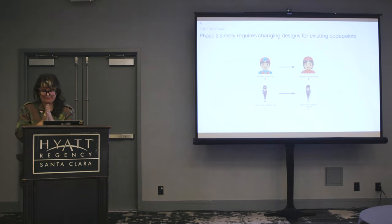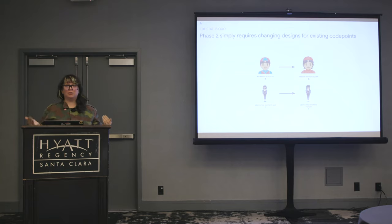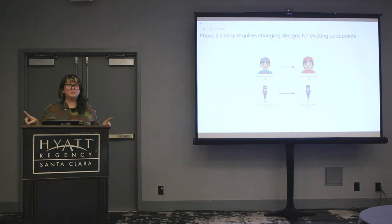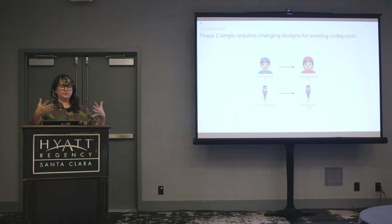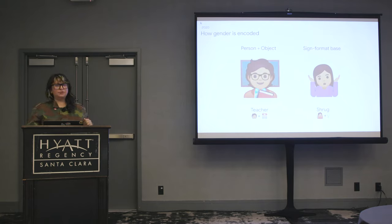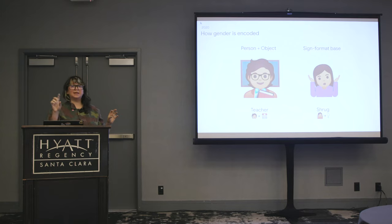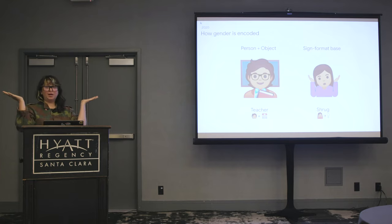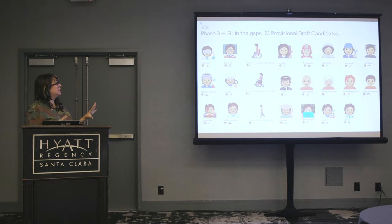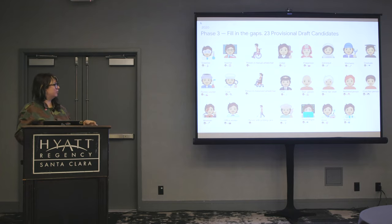That was just phase one. Phase two simply requires changing some designs for existing code points. Two particular fairly obscure emojis — man with skullcap and levitating businessman — both have interesting histories. The recommendation here is to remove them from the explicitly gendered list on TR51 and create gender-inclusive designs. Phase three requires a deeper understanding of how gender is encoded with emoji. There are two real formats: one is combining a person emoji with an object emoji — so school teacher is person plus school. There's also a sign format base, which is person plus a sex symbol — so if you want woman shrugging, it's person plus female sign.